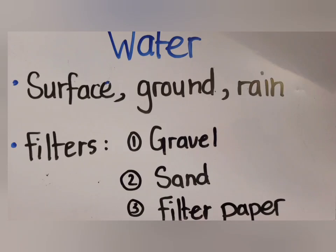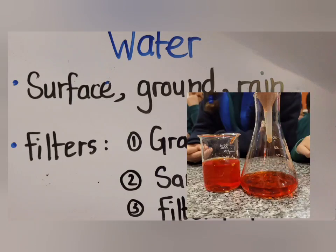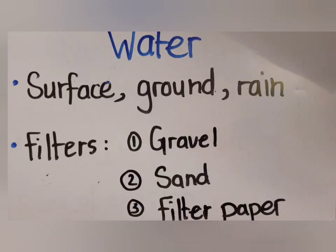However, if some kind of dirt is dissolved in the water, it will pass through the filter. For example, if you put salt or sugar in the water and put it through the filter, the filter cannot remove dissolved substances because you can't see them. Just like our experiment with water colors — when the water was red, it remained red because the food color was dissolved in the water and the filter couldn't remove it. That's all you need to know for the lesson on water.